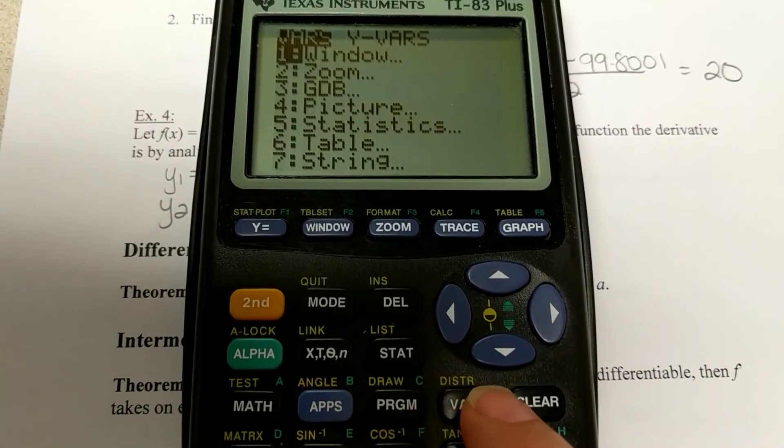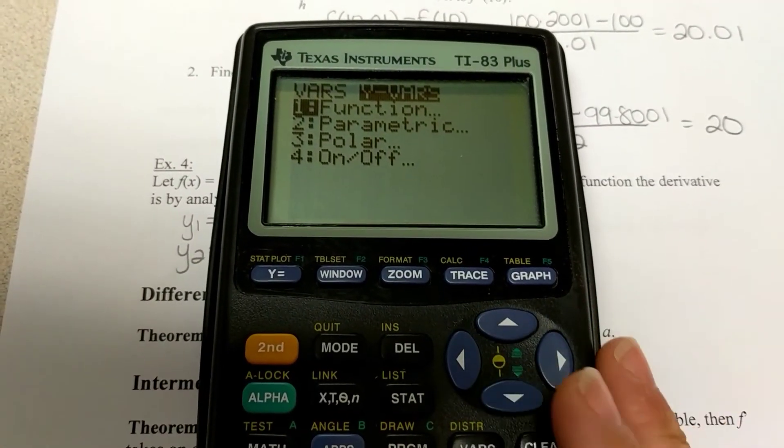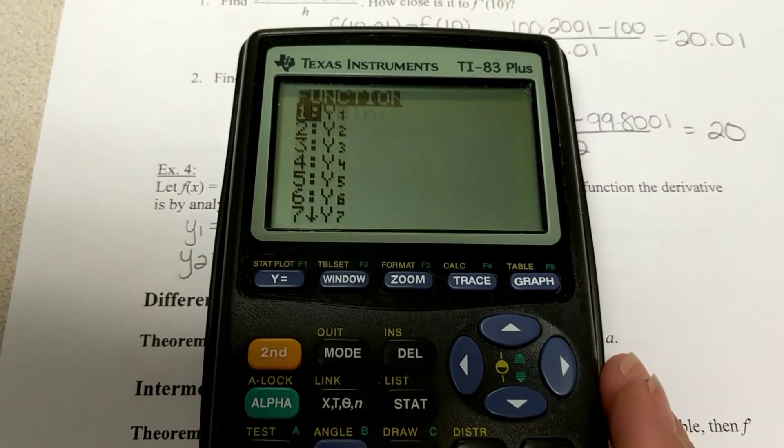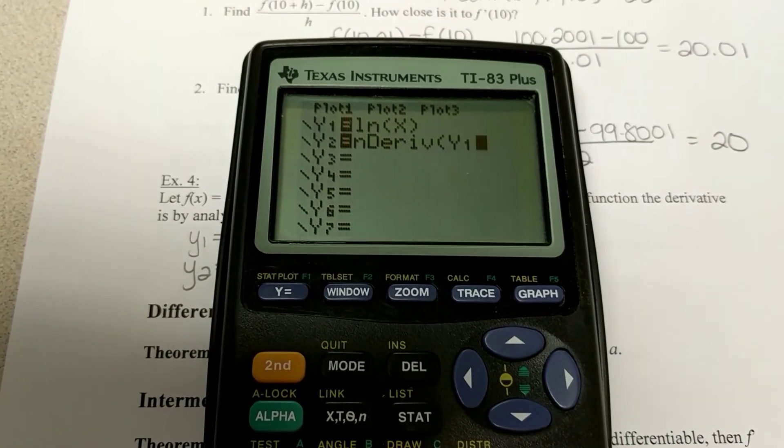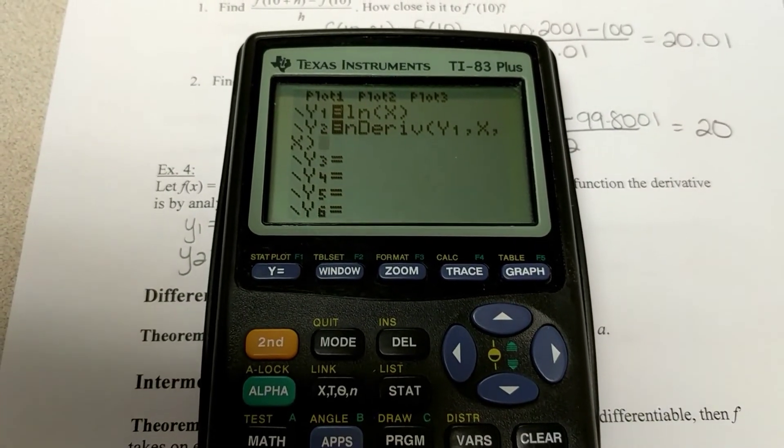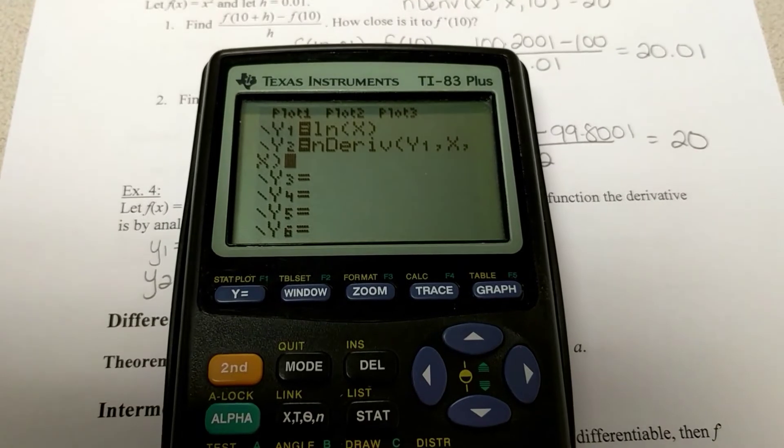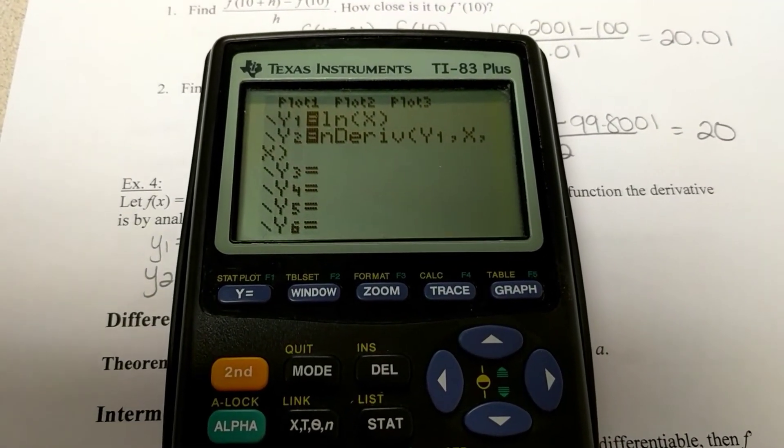So, I'm going to hit VARS, yVARS, function, and y1. And copy and paste. And then we're going to hit comma x, comma x. And it's now going to graph both of those. Graph that function. And I want you to figure out what function is it graphing for the derivative.